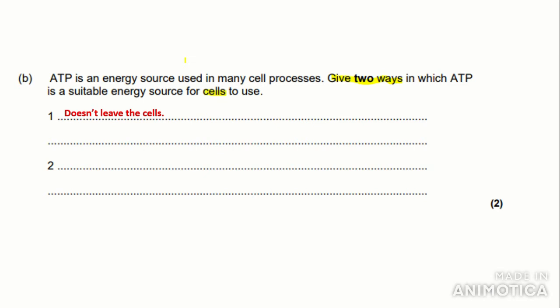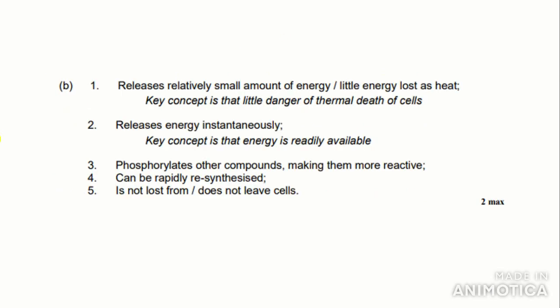One thing we can put is that ATP doesn't leave the cell so it can be constantly used. You don't need to provide an explanation as the question only says 'give.' Another point is that it releases energy instantaneously. So if we look at the mark scheme: 'releases a relatively small amount of energy' or 'little energy is lost as heat,' with the key concept being 'little danger of thermal death of cells.' 'Releases energy instantaneously' — we wrote that — and the key concept is that energy is readily available.